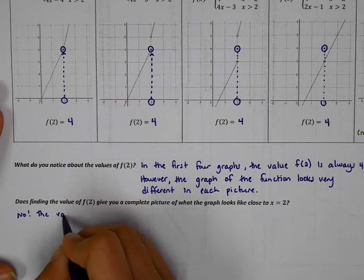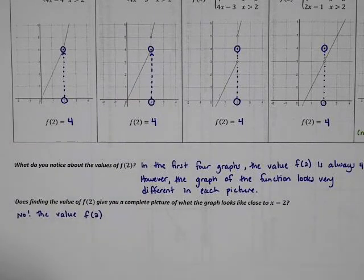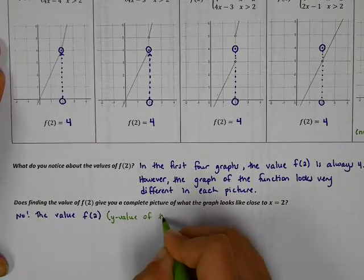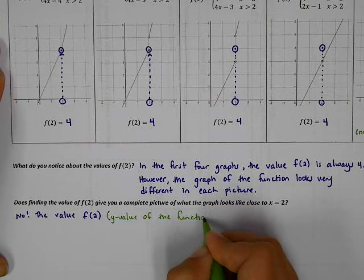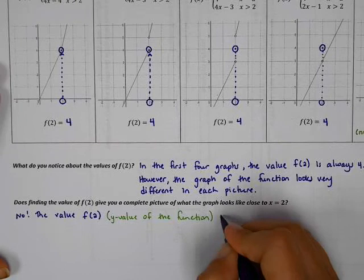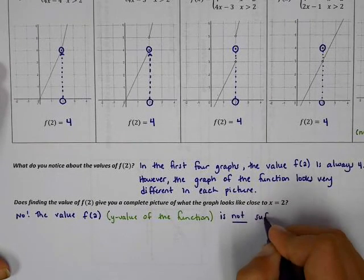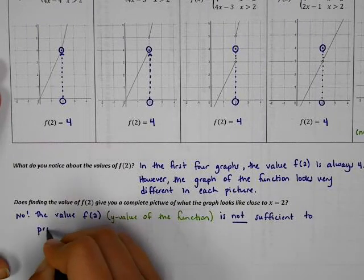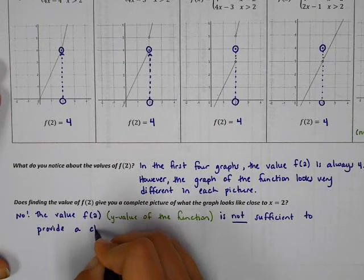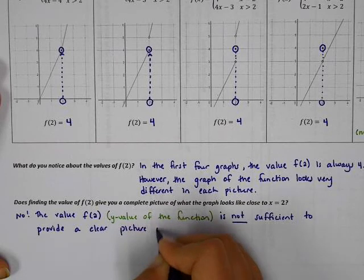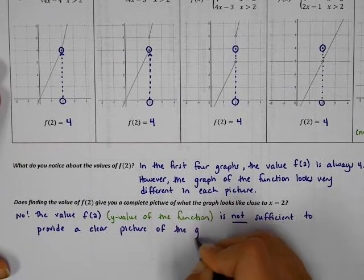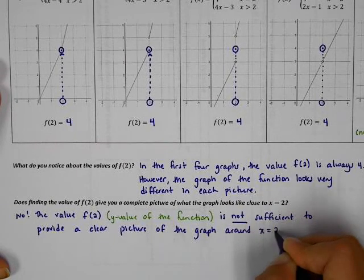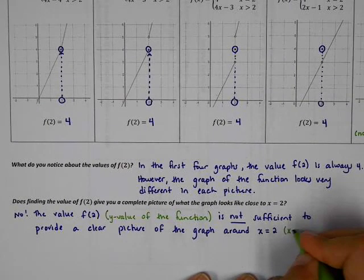The value f of 2, which is the y value of the function, is not sufficient to provide a clear picture of the graph around x equals 2, the specific x value that we were looking at.